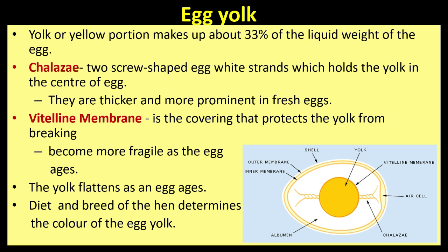The vitelline membrane is a covering that protects the yolk from breaking. It becomes more fragile as the egg ages, and the yolk flattens as an egg ages. Diet and breed of the hen determines the color of the egg yolk.